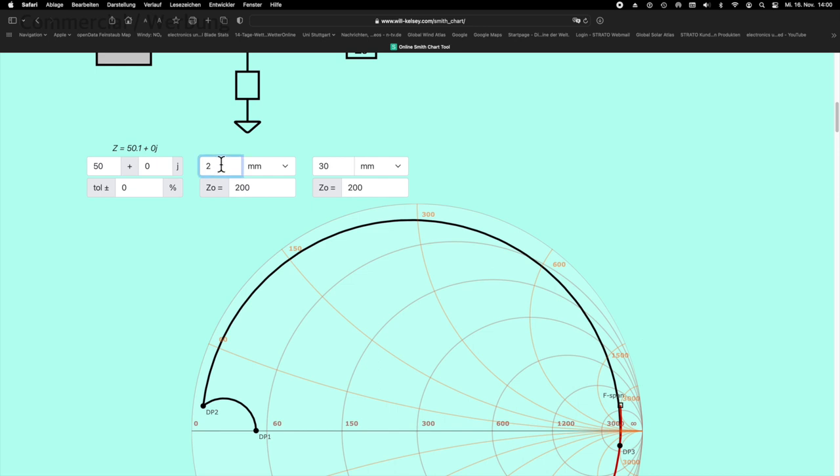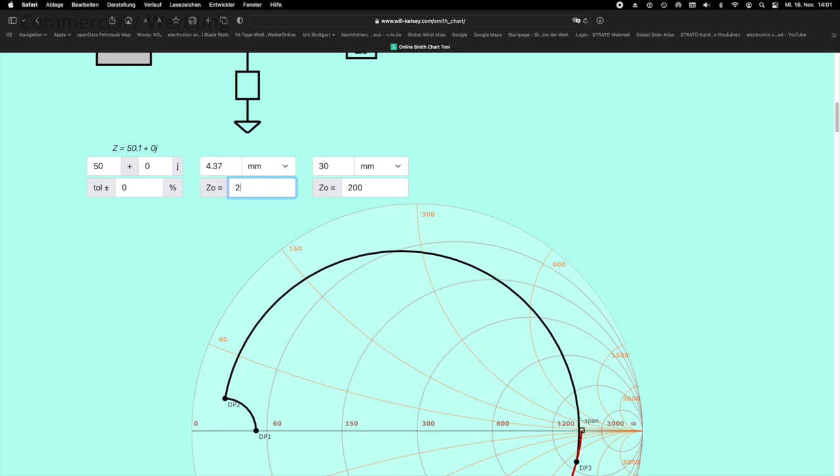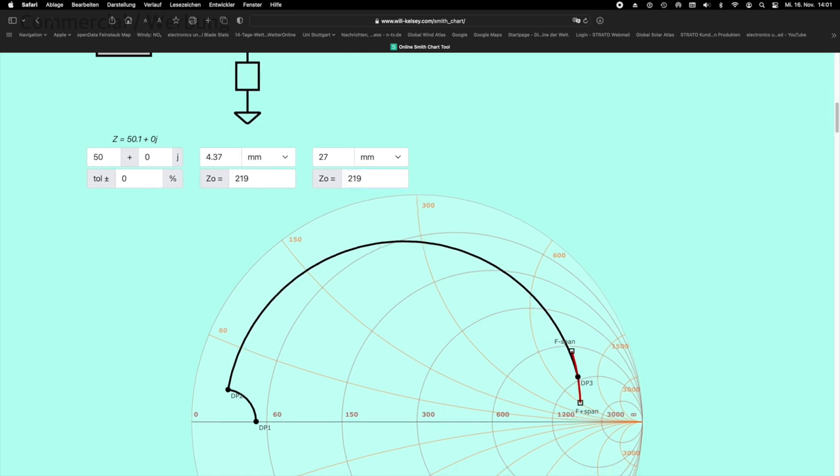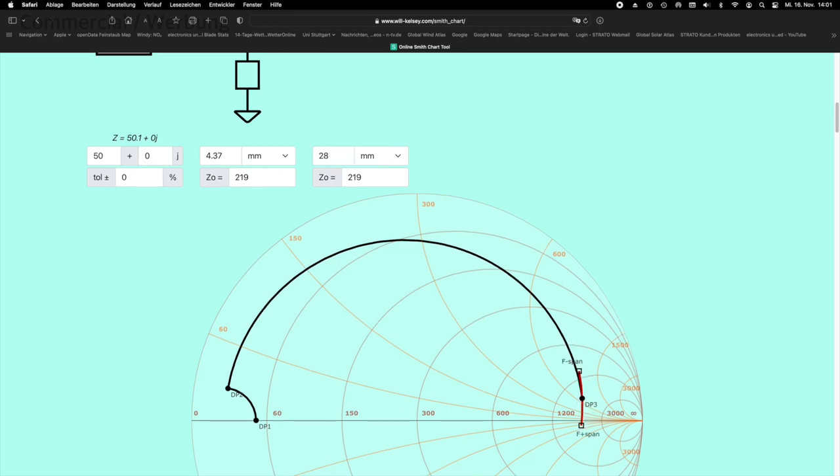Okay, now let's use the values we calculated earlier for our loop antenna. The stub has a length of 4.37 mm and a waveguide impedance of 219 ohms. The serial waveguide is 27 mm long and also has an impedance of 219 ohms. We increase the latter until we reach the real axis of the Smith chart. So, we would have now a matching network that transforms the 50 ohms of our transmitter output to the high impedance of an antenna. The red line now shows us the effect of our frequency span of plus and minus 100 MHz.